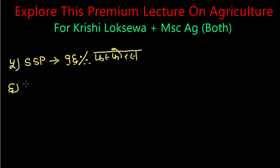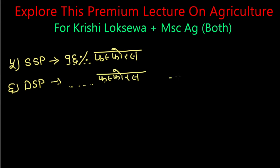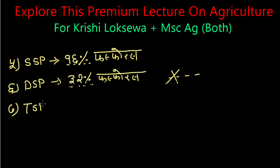Now, in double superphosphate, how can you get phosphorus? We will have 32% phosphorus from double superphosphate. Number 7 is triple superphosphate — triple superphosphate will have 48% phosphorus.